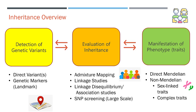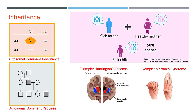When traits are manifested, they typically fall under direct Mendelian or non-Mendelian categories. Sex-linked as well as complex traits are typically non-Mendelian in nature. Autosomal dominant inheritance is defined as where a single abnormal gene on one of the autosomal chromosomes from either parent can cause certain diseases. One of the parents will usually have the disease, since it is dominant in this mode of inheritance.